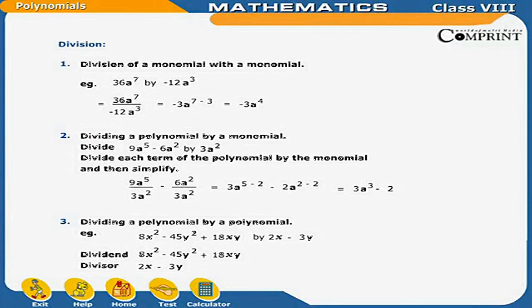Division 1: Division of a monomial by a monomial. For example: 36a⁷ divided by minus 12a³ equals 36a⁷ ÷ (minus 12a³) equals minus 3 × a^(7-3) equals minus 3a⁴.